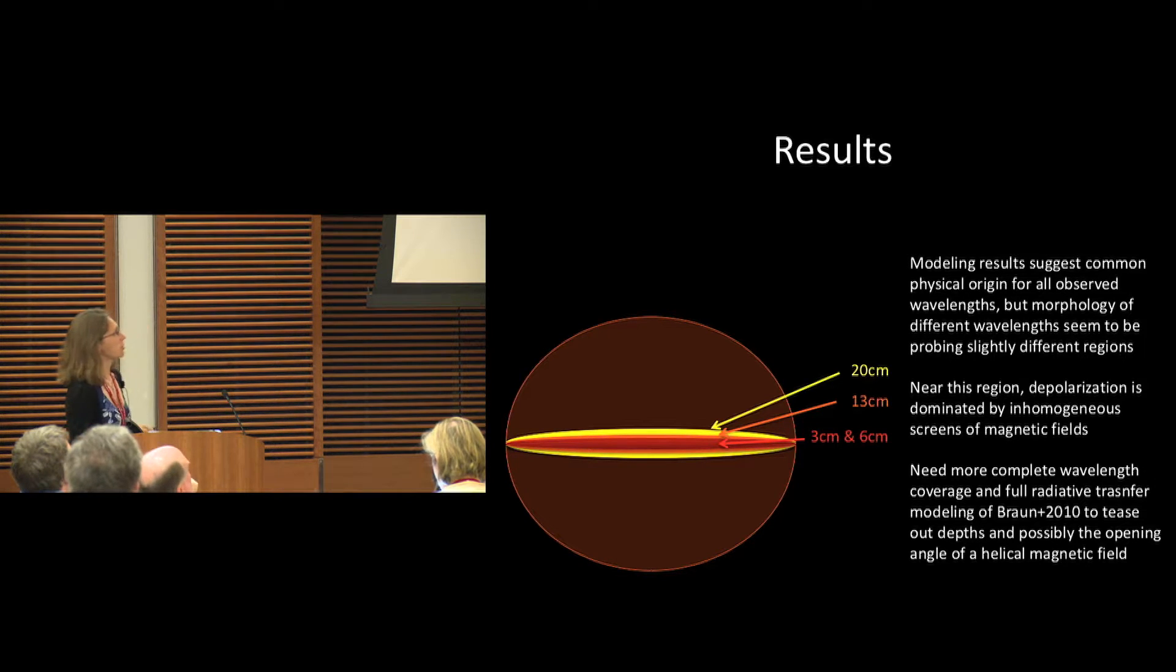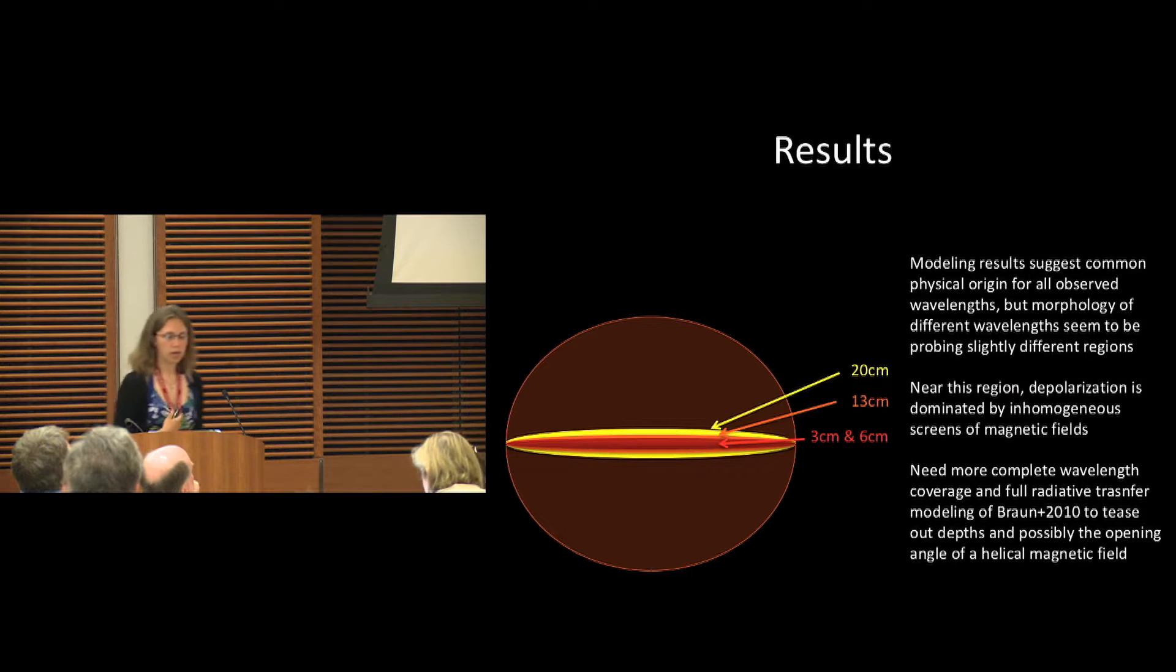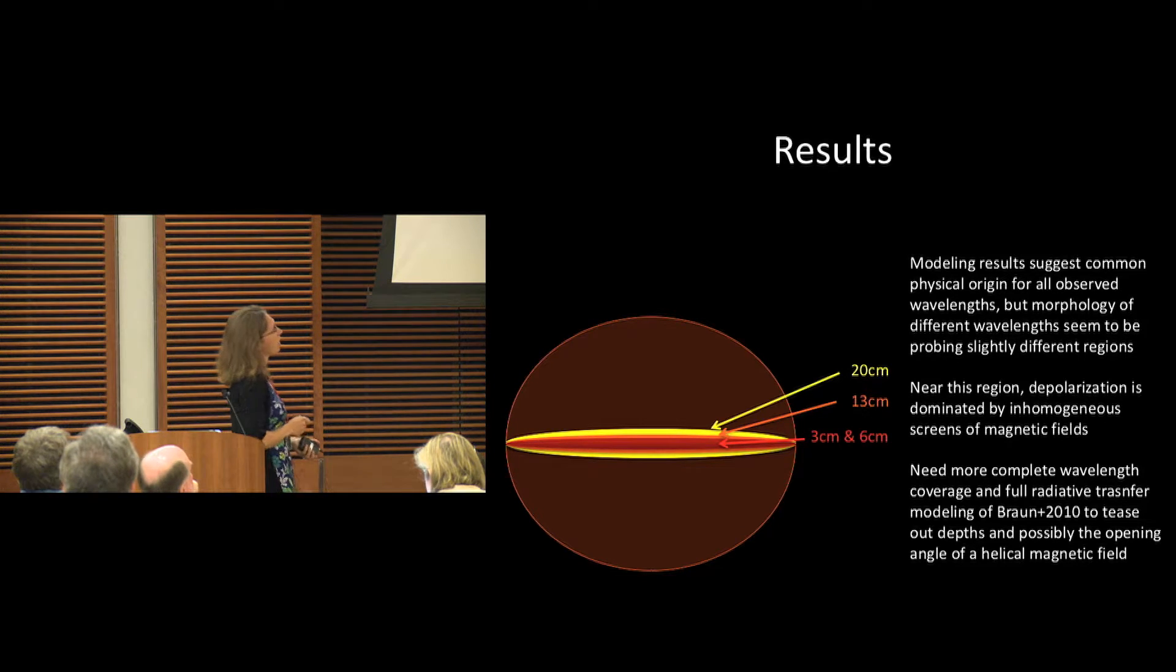It seems that all of our polarized emission is coming from a thin layer near the disk of star formation, but our 20 centimeter emission is probably probing cosmic ray electrons getting a little bit higher and probing slightly different magnetic fields than both the 13 or 3 centimeter emission.